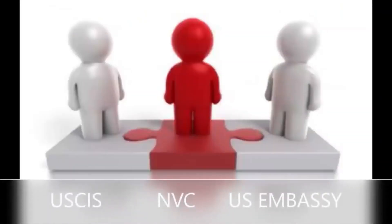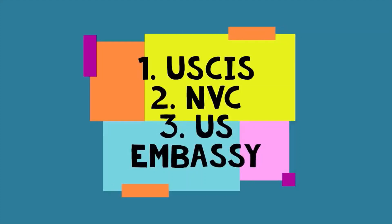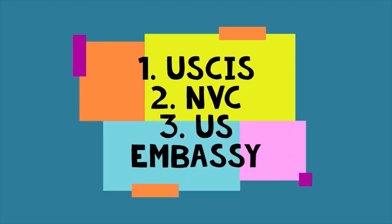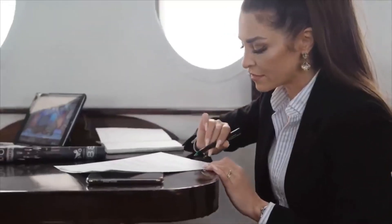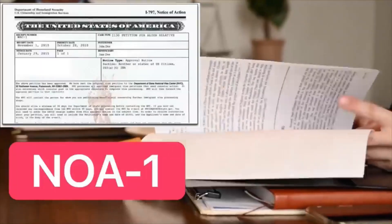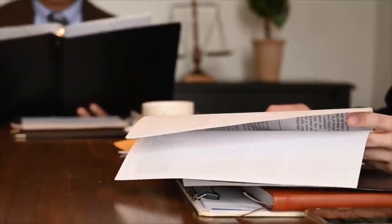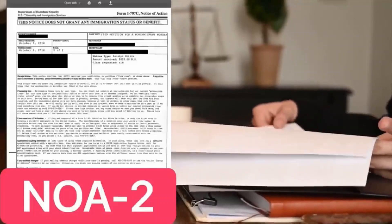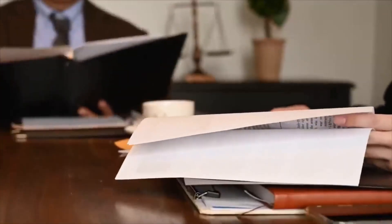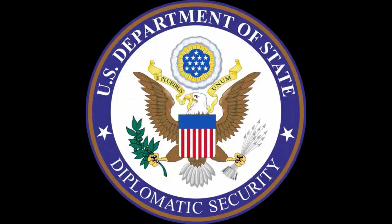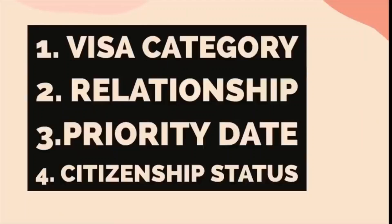Let's get started. The National Visa Center acts as a middleman between United States Citizenship and Immigration Services, more commonly known as USCIS, and the United States Embassy. An average immigrant petition goes through the following stages: number one, USCIS; number two, NVC; and then finally, the US Embassy. Once the petition I-130 or I-129 is filed at USCIS, a Notice of Action NOA1 form is issued. Once the petition is processed at USCIS, Notice of Action 2 is then issued and the petition is transferred to the National Visa Center.